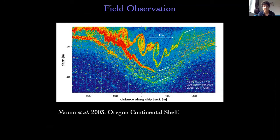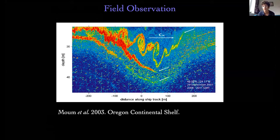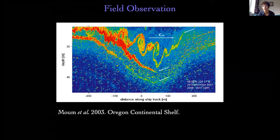Here's an observation made by Moum and others in 2003 of an internal solitary wave on the Oregon continental shelf — an acoustic image showing a wave going from left to right, with the pycnocline disturbed and beautiful overturning billows visible. At the time the authors hypothesized these were Kelvin-Helmholtz billows due to shear, but weren't able to prove it. Hopefully our modeling studies have helped back up that hypothesis. It's really nice to do a combination of lab modeling, numerical modeling, and field observations to understand what's going on.